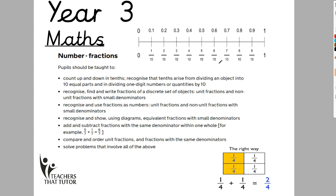Fractions — there is a slight dip in children's achievement in year three just because there's so much content and so many tricky concepts. In year three they're first introduced to numbers less than zero and the idea of tenths. Between zero and one there are tenths, written as a fraction — one tenth, two over ten, three over ten — but also written as decimals: 0.1, 0.3. So it's their first introduction to decimal numbers. They'll also learn to add fractions with the same denominator, keeping the denominator the same and only adding the numerators — for example, one quarter plus one quarter equals two quarters, or five sevenths plus one seventh equals six sevenths.